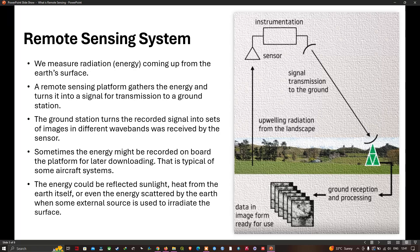Sometimes the images are recorded on the platform itself and then downloaded when the platform returns to the earth's surface. That is often the case for aircraft remote sensing or when drones are used. The energy that the sensor detects is most often just sunlight reflected from the earth's surface, just like we see the landscape from a window of an airplane. The energy could also be reflected sunlight or heat from the earth itself, or even energy scattered by the earth when some external source is used to irradiate the surface. A typical example of that could be scattered radio waves in the case of radar imaging.